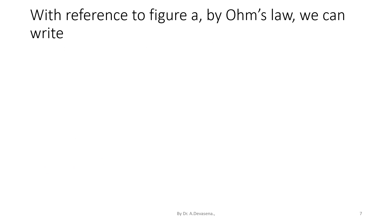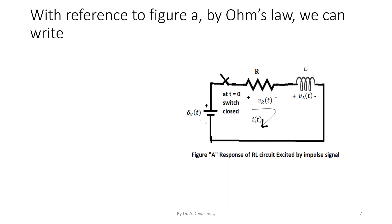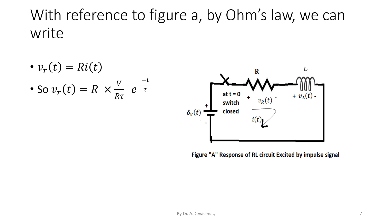With reference to figure A by Ohm's law, we can write V suffix R of T is equal to R into I of T. We know the value of I of T, so we substitute it into this equation. V suffix R of T is equal to R into V divided by R tau into e power minus T by tau. That is V suffix R of T is equal to V by tau into e power minus T by tau.